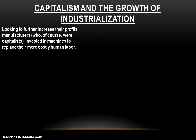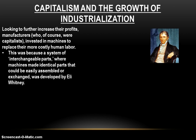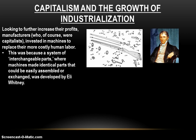Looking to further increase their profits, manufacturers invest in machines to replace their more costly human labor, always looking for a way to drive costs down to make more money. This is because a system called interchangeable parts had been developed by Eli Whitney — famous for the cotton gin. He came up with the idea where machines would make identical parts that could all be easily assembled or exchanged. Rather than one person building one chair by hand and making all the parts, a machine prefabricates all the parts and one person simply puts the chair together. Interchangeable parts makes production much faster and more efficient, which means more money.